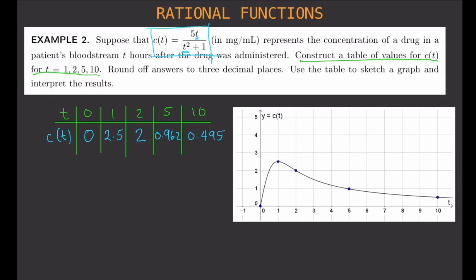The last thing we need to do is interpret the results. This means that the highest concentration is after 1 hour — that's where the highest concentration of the drug in the bloodstream occurs. Then it slowly trickles down. After 10 hours it was about 0.495, and you could expect that number to continue to go lower in the next hours.